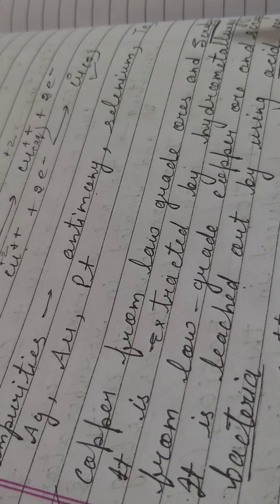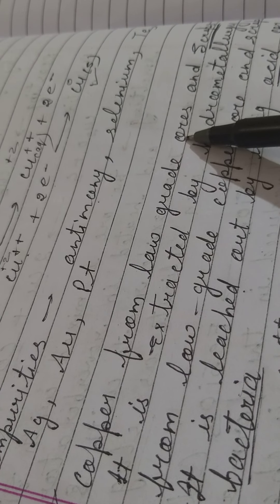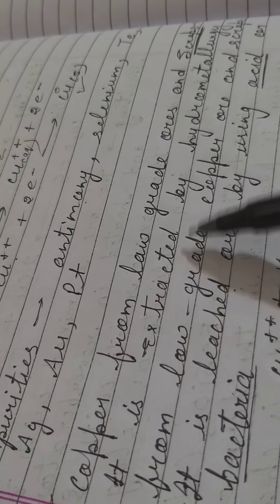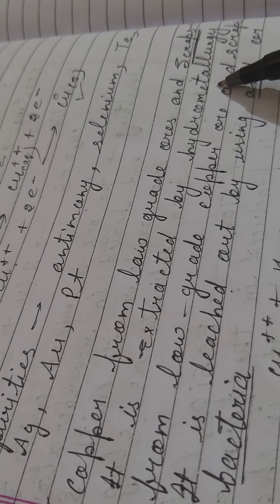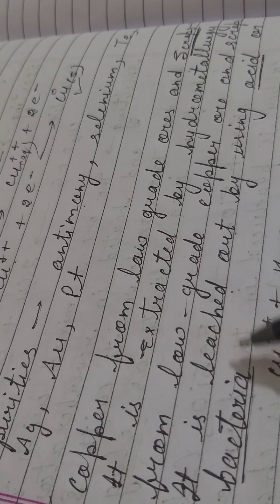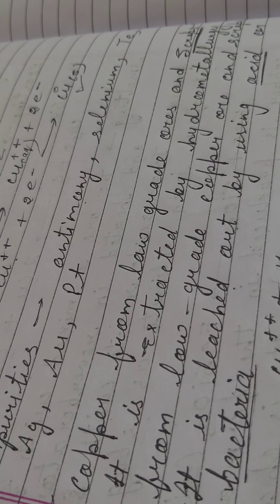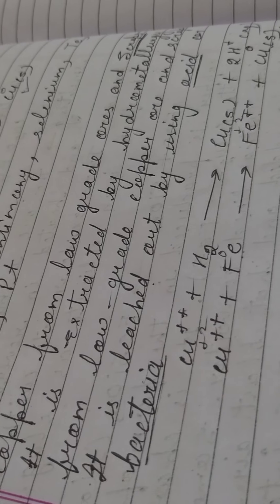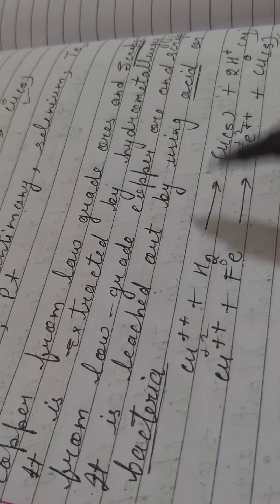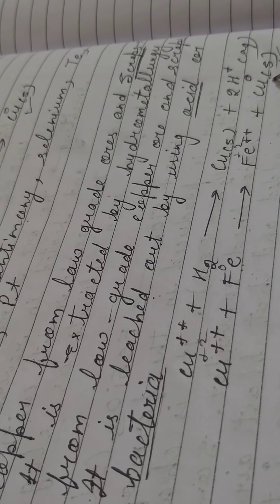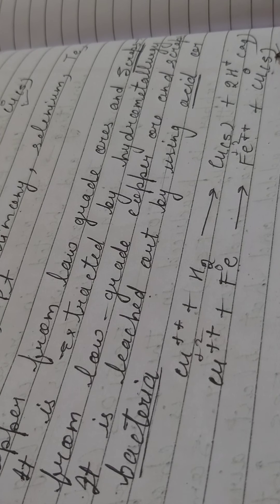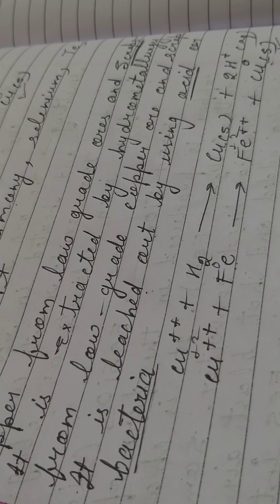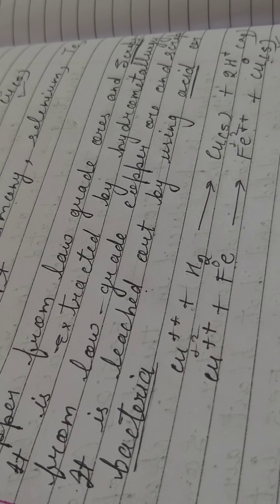To extract free copper from low-grade ore or scrap containing other metal content, the process of hydrometallurgy is used. In this process, acids and bacteria are applied; since a chemical solvent is used, it also falls under the category of leaching. Cupric ion reacts with H₂ or with Fe to yield free, impurity-free copper. This completes the metallurgy of copper for low-grade ore.